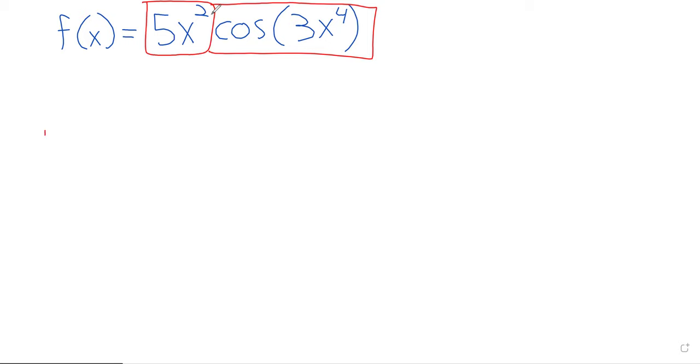So if we're going to take the derivative, we're going to need the product rule. The product rule says, okay, take the derivative of the first function. The derivative of 5x squared is 10x. The 2 comes down.